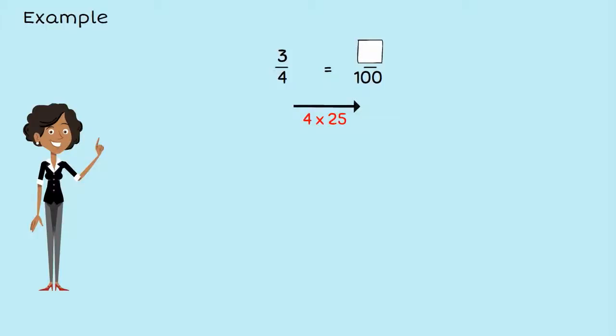Whatever we do to the denominator, we do the same thing to the numerator. So 3 times 25 equals 75. We now have 75 over 100, which is 75%.